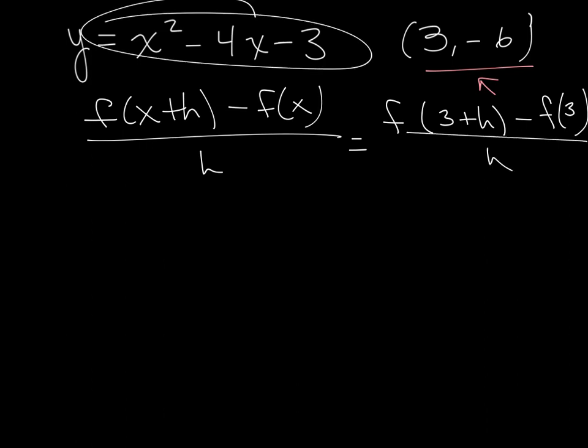Then I take my equation and I rewrite it: x squared, where you see x plug in 3 plus h. So x squared minus 4x, where you see x plug in 3 plus h, minus 3.